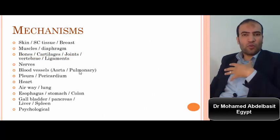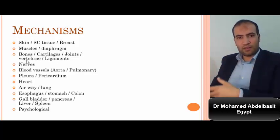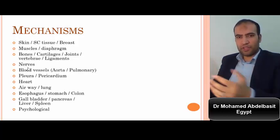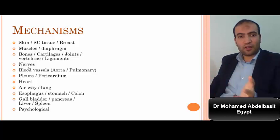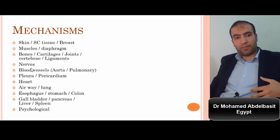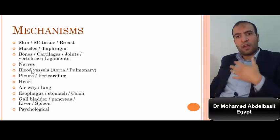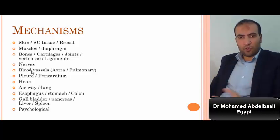What are the possible mechanisms of chest pain? The chest wall is not just heart and lung. It includes skin, subcutaneous tissue, breast, muscle, diaphragm, bone, vertebrae, nerves, blood vessels, heart, lung, pleura, pericardium, airway, esophagus, gallbladder, spleen, liver, and psychological factors. All of these could induce chest pain, and you have to differentiate between them.